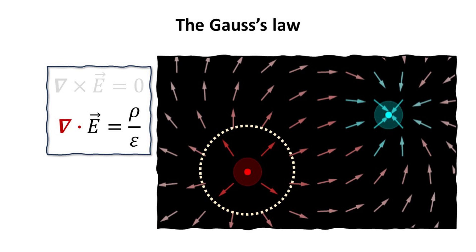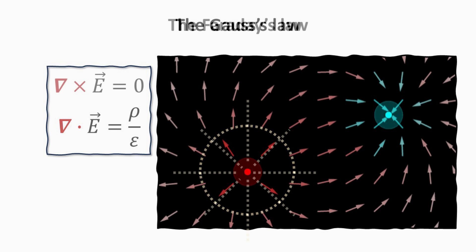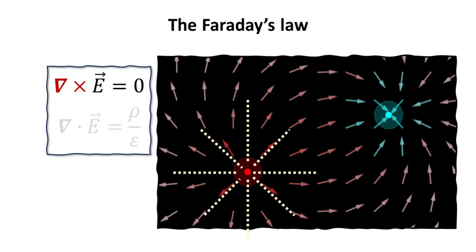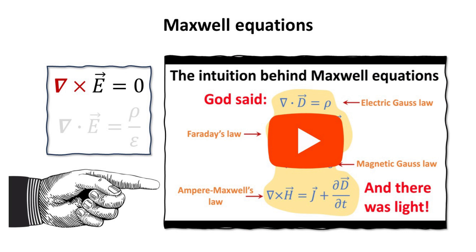Gauss's law states that the divergence of the electric field is proportional to the charge density. Faraday's law states that the static electric field has zero curl. If you need a refresher on these two Maxwell equations, please check out our videos on Maxwell equations in the electromagnetic playlist.